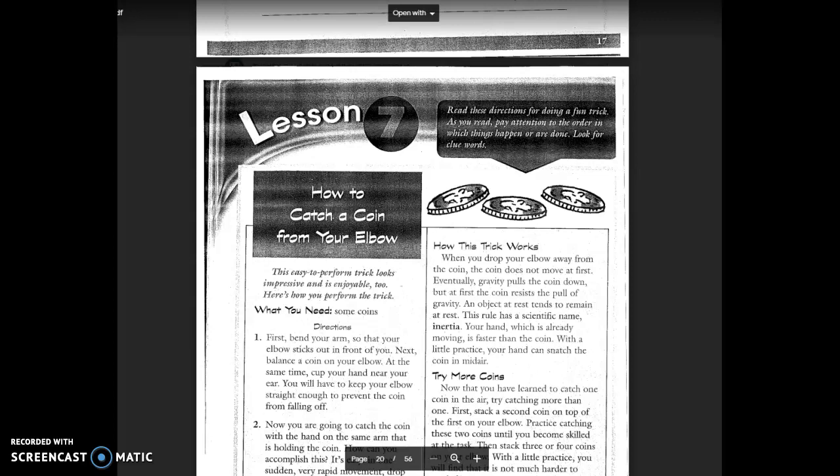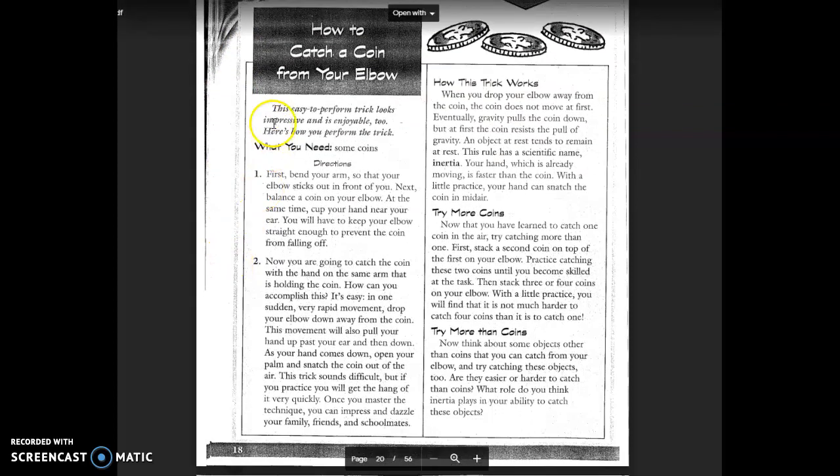Alright, it's Wednesday's reading and we're in our focus book again and we're on pages 18 and 19. We're going to read how to catch a coin from your elbow. Read these directions for doing a fun trick. As you read, pay attention to the order in which things happen or are done. Look for clue words.